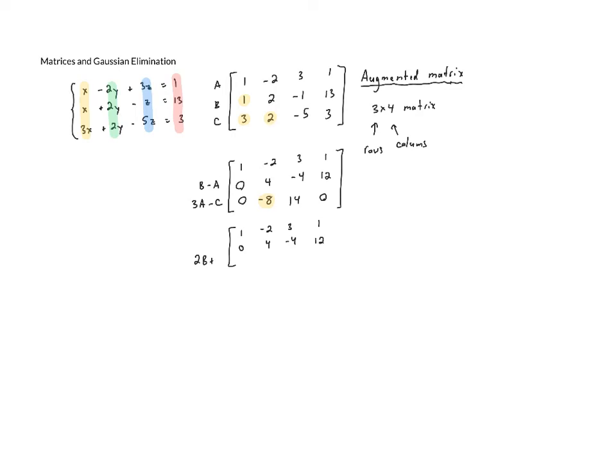So we've got 2B plus C and that's going to end up getting rid of that negative 8. So 2 times 0 plus 0 is still 0. 2 times 4 is 8 plus negative 8 is 0. 2 times negative 4 is negative 8, and negative 8 plus 14 is 6. And then 2 times 12 is 24, and 24 plus 0 is 24. So our new augmented matrix looks like this. Now we have gotten it into triangular form. Notice how all of the non-zero coefficients are up here, and we've got zeros down there.